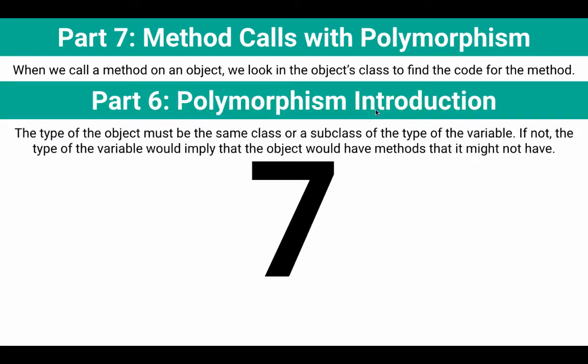Remember from part six, the type of the object must be the same class or a subclass of the type of the variable. If not, the type of the variable would imply that the object would have methods that it might not have.